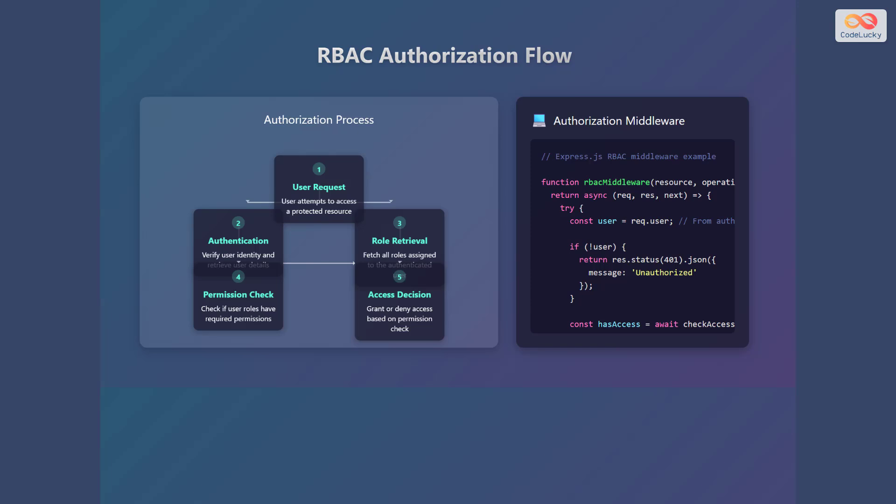This code shows an example of an Express JavaScript middleware that checks user access based on roles and permissions. If the user is not authorized, it returns a forbidden message.